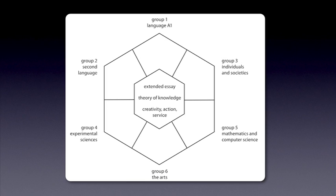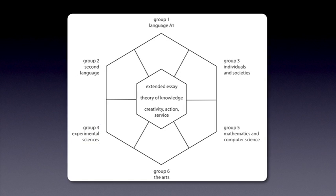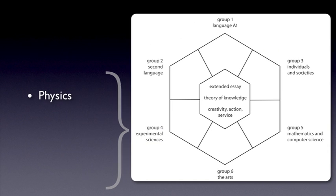The physics course belongs to the Group 4 academic area called Experimental Sciences. Physics, Chemistry, and Biology are some of the Group 4 subjects. Each IB Diploma student has to take one science, though it is possible to take two subjects from Group 4.